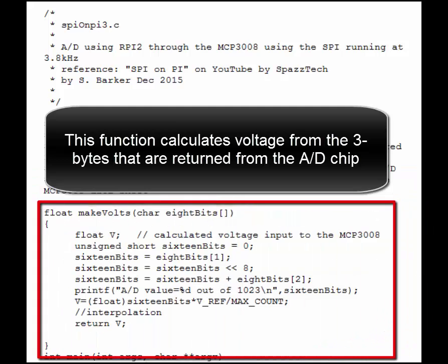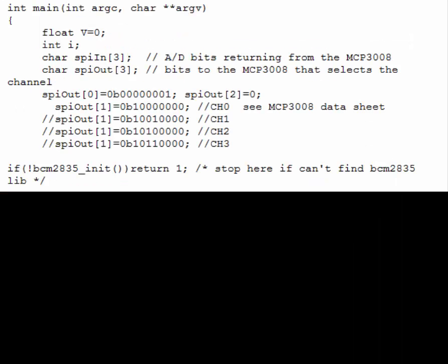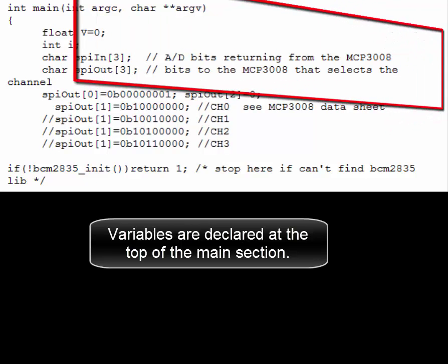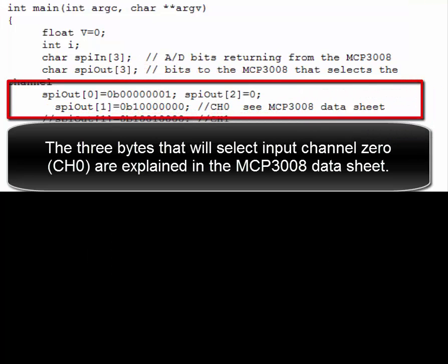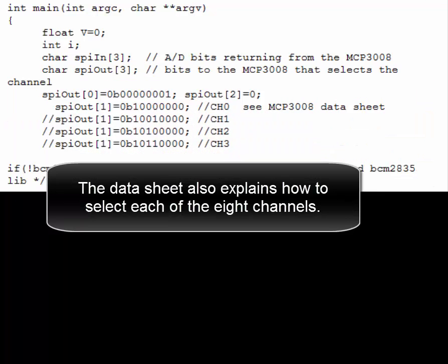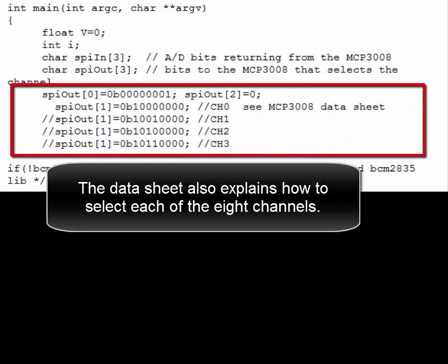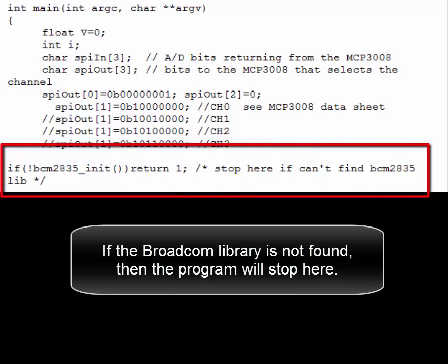This function calculates voltage from the 3 bytes that are returned from the microchip. Variables are declared at the top of the main section. The 3 bytes that will select input channel 0 are explained in the microchip data sheet, which also explains how to select each of the 8 channels. If the Broadcom library is not found, then the program will stop here.